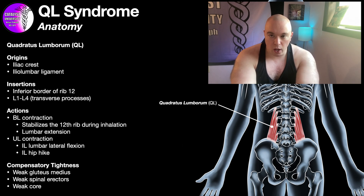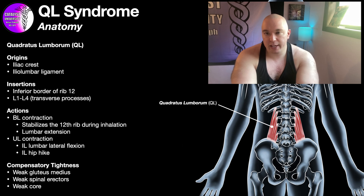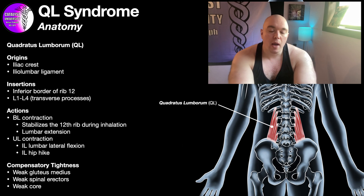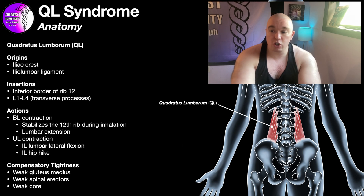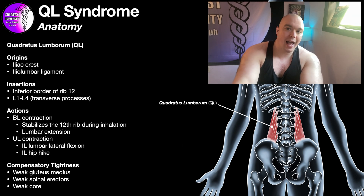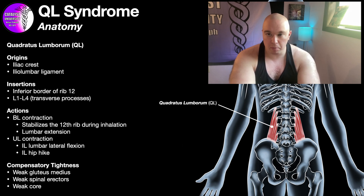The actions of the QL depend on whether both are contracting at the same time or the contractions are unilateral. For bilateral contractions, there are two main actions. The most common one we think of is lumbar extension — the spinal erectors are the prime movers of lumbar extension, but the QLs will act synergistically with those. They also stabilize the 12th rib during forced inhalation or inspiration.